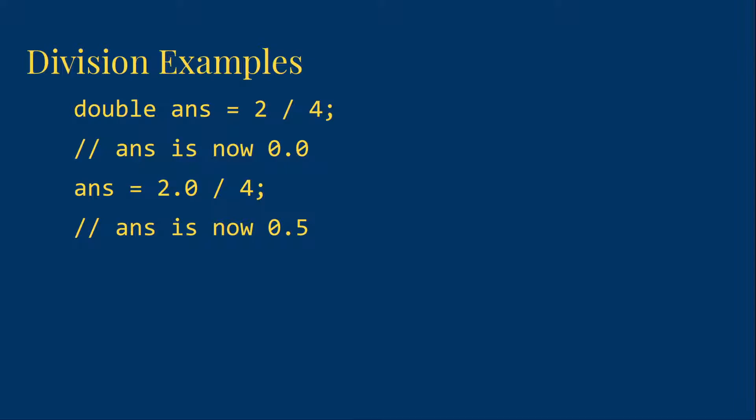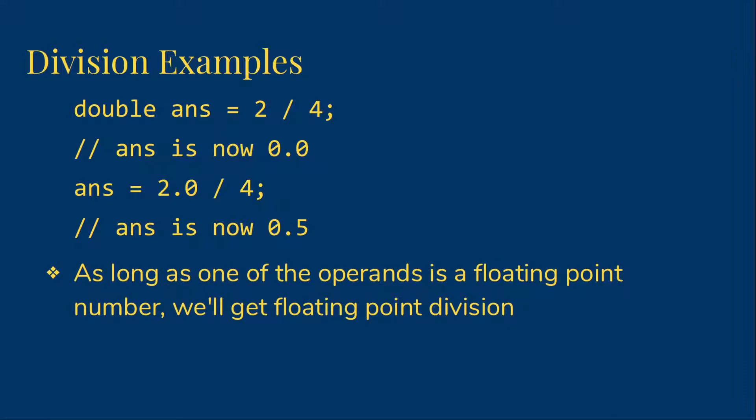Integer division will only apply if both operands are integers. If either is a floating point number, any integer involved will be converted to a floating point number, and floating point division will apply.